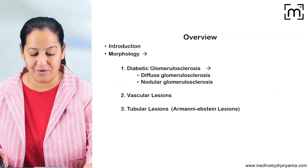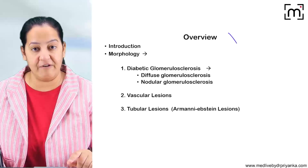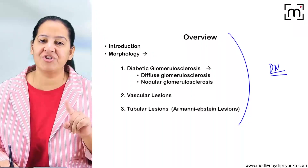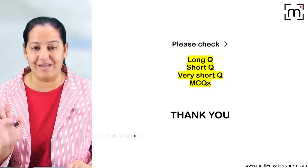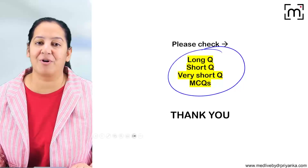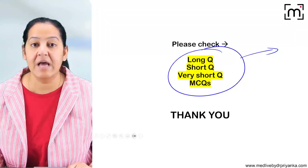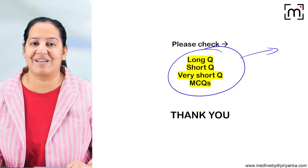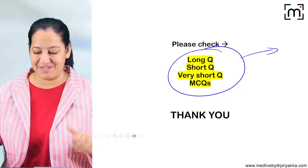That's all about diabetic nephropathy. If a long question comes, write down everything. If a short question comes on any one pattern, write that specifically. Don't forget to see the previous year university exam questions from this topic in the question bank and notes section — you will become confident after that.